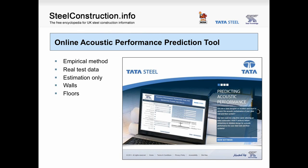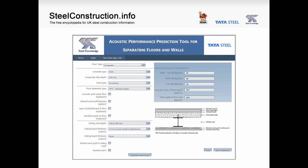To assist with prediction of acoustic performance of steel frame constructions, an online acoustic prediction tool has been produced, based on real test data taken from steel frame buildings throughout the UK. The results are intended for estimation purposes only, not for detailed design. There are five different types of steel construction floors included. The user inputs the floor construction, ceiling type, and floor treatment applied above the floor. The tool then gives predicted acoustic performance: a DnTW plus CTR value, a DnTW value on its own, and an impact value of LNTW.